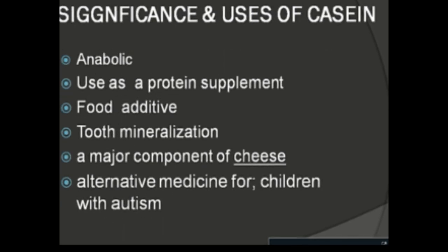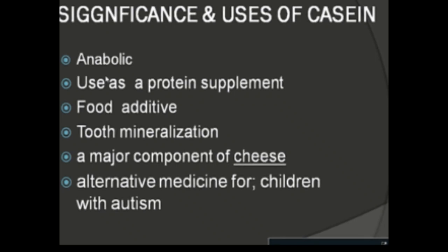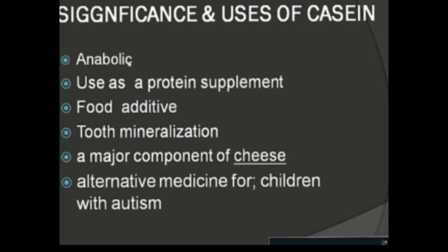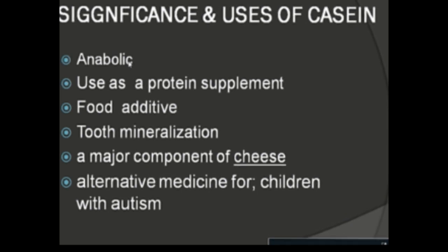What is the significance and uses of casein? Casein is highly anabolic. Several foods, creamers, and toppings contain a variety of caseinates, especially in the form of sodium caseinate. It acts as a food additive and stabilizes processed food.